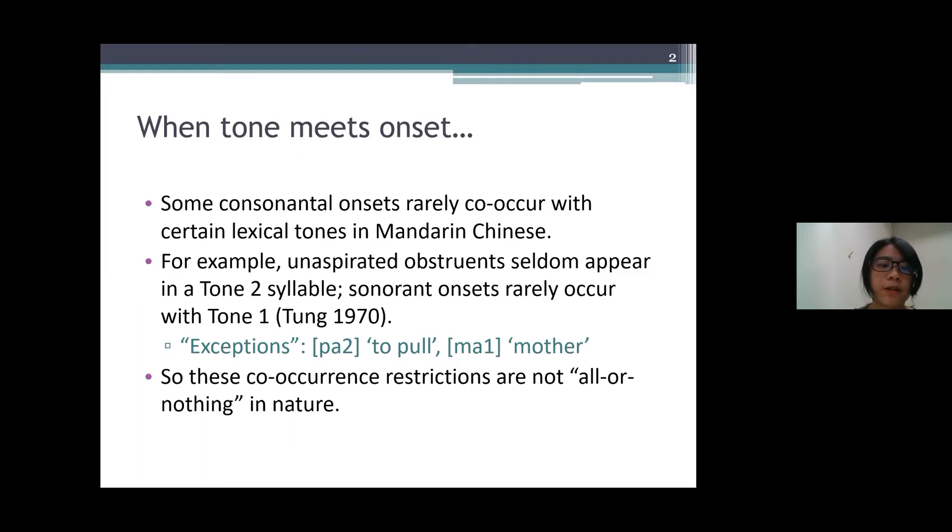However, there are still a fair amount of exceptions to this robust tendency in the lexicon. So here are two examples: the word for 'to pull', ba, has an unaspirated obstruent onset but also a tone 2, and the word for 'mother', ma, has a sonorant onset and a tone 1. So these co-occurrence restrictions are not all-or-nothing in nature.